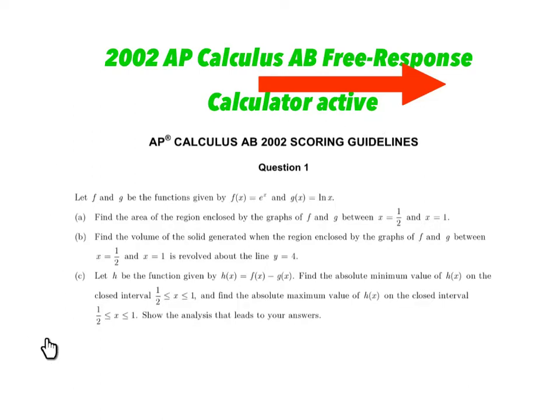It's from 2002, and it is definitely calculator active. So I've got the whole question laid out here for you. There's just an A, B, and C. And you'll notice they don't give you the functions. It's a nice area volume question. So let's go ahead and read it, and I'll show you what runs through my head, and hopefully you're thinking the same thing. It says, let f and g be the functions given by f(x) = e^x and g(x) = ln(x).